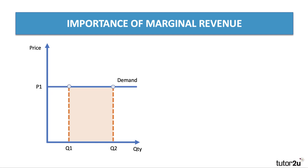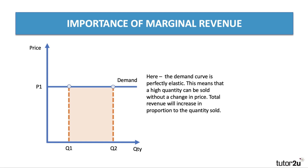There is one special case where the demand curve is drawn as a perfectly elastic horizontal demand curve — a coefficient of infinity for price elasticity of demand. Here, if you charge P1, you might sell Q1 or Q2, but you can sell any quantity you want at the same price. Any extra sale will be adding to your revenue at the same rate. So if the demand curve is perfectly elastic, a higher quantity can be sold without a change in price, and revenue will increase in proportion to quantity sold. In this situation, the average and marginal revenue curves are one and the same.